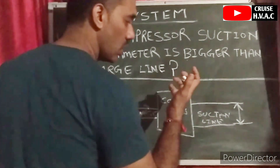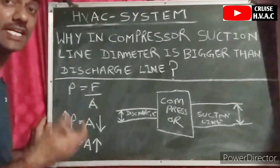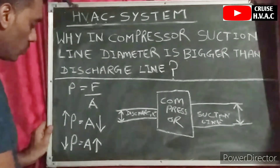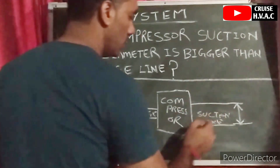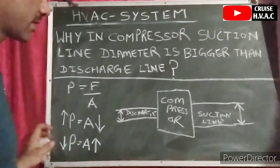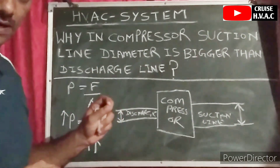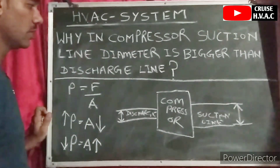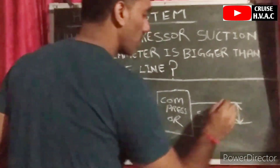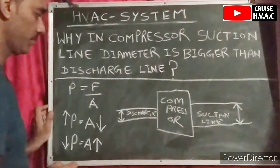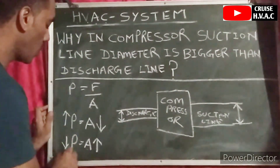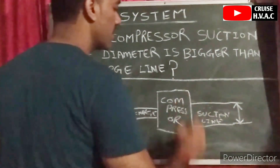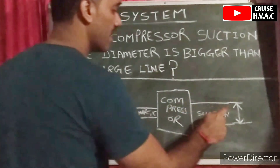When the refrigerant is in low pressure vapor form, its density is low. When the density of the vapor is low and the pressure is also low, the area is supposed to be bigger. This protects the compressor — because the compressor is made only to compress vapor refrigerant. If any liquid form of refrigerant goes inside the compressor, it will be completely damaged. So on the suction line, because the pressure is low, the area of the pipe is higher, and therefore the diameter of the pipe is higher.